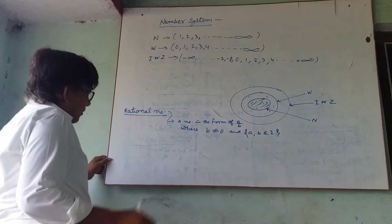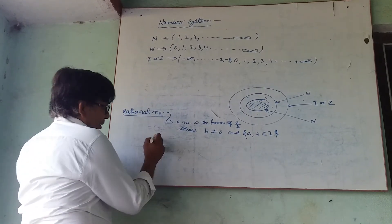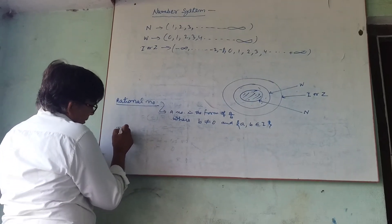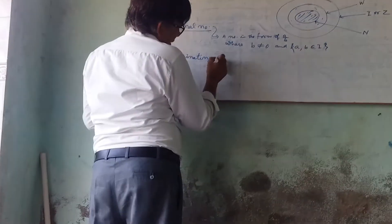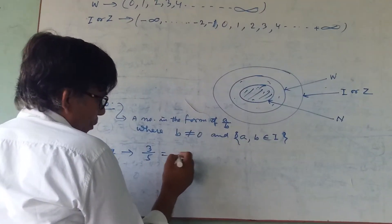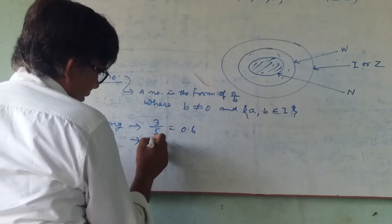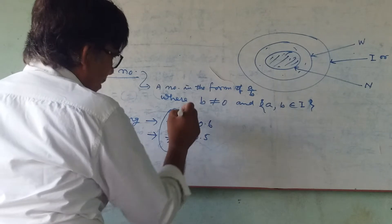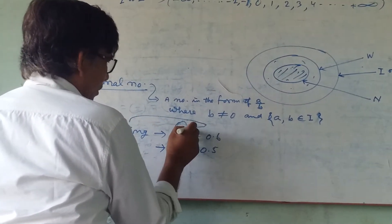A rational number must be written as A/B. There are two types of rational numbers. If they are expressed in decimal form, they are either terminating decimals — for example, 3/5 = 0.6 and 1/2 = 0.5. These are terminating decimals.